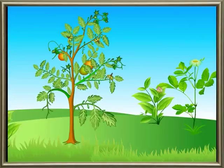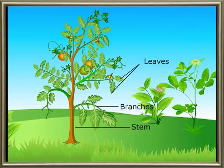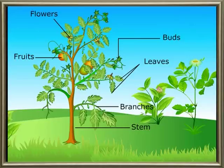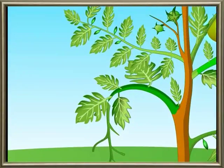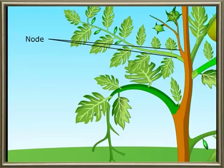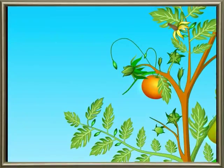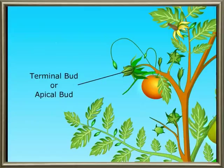The part of the plant which grows vertically above the ground is called the stem. Branches, leaves, buds, flowers, and fruits are formed on the stem. The part of the stem at which a leaf arises is known as a node, and the region between two nodes is called the internode. The bud at the end of the stem is called the terminal bud or apical bud, which helps in the growth of the stem. The angle between the leaf and stem is called the axil, and axillary buds formed in axils produce branches and flowers.